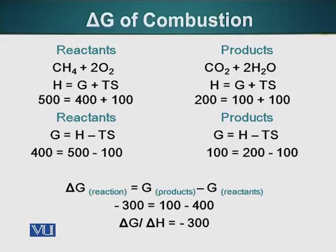Let's look at an example of this equation. Say our system is made up of methane and oxygen. These two molecules are present in our system — these are all arbitrary numbers. The total energy of the system is 500 units. Out of this 500, 400 units is the usable energy or free energy G, and 100 units is the unusable energy — entropy or disorder. After this reaction, when methane is burned through combustion, we have carbon dioxide and water as products.